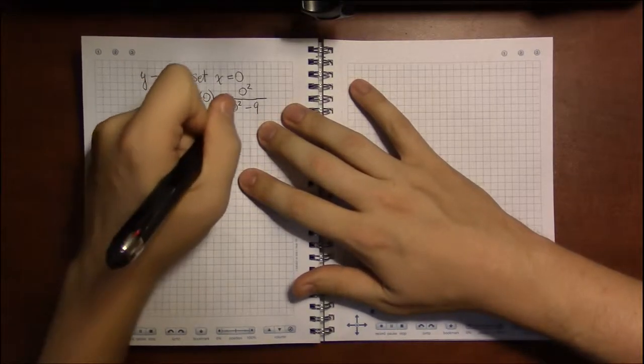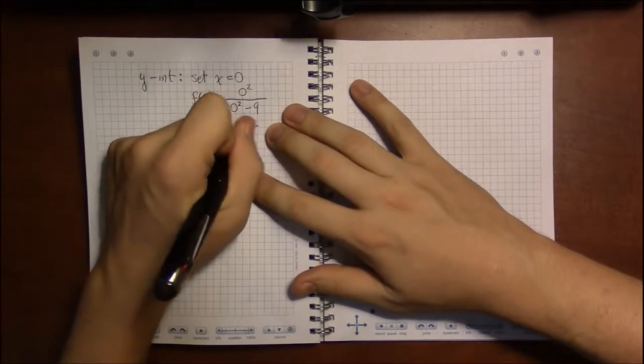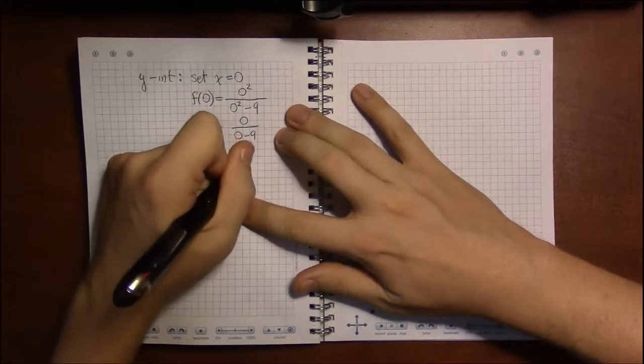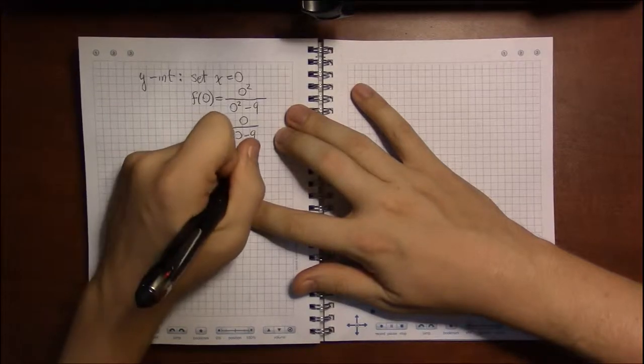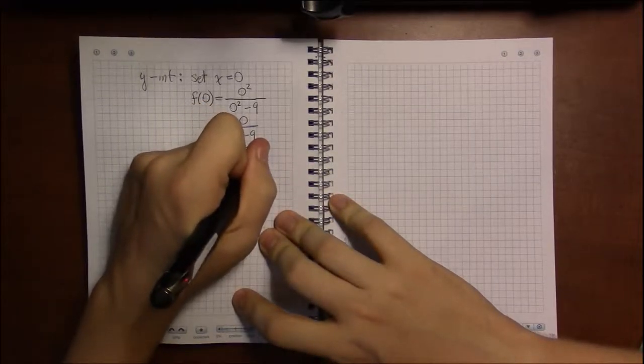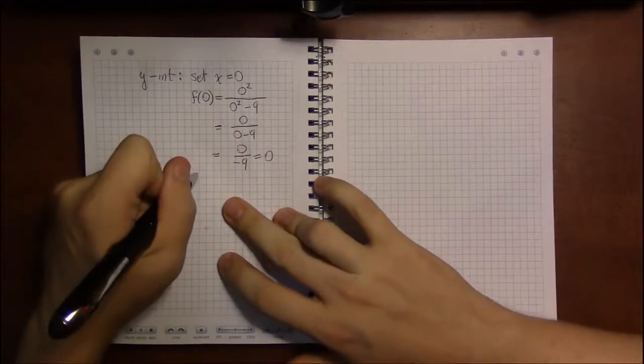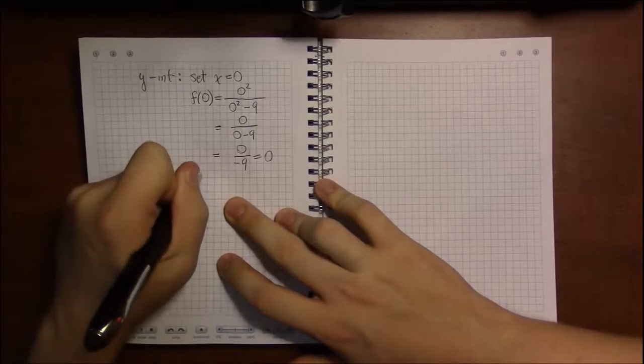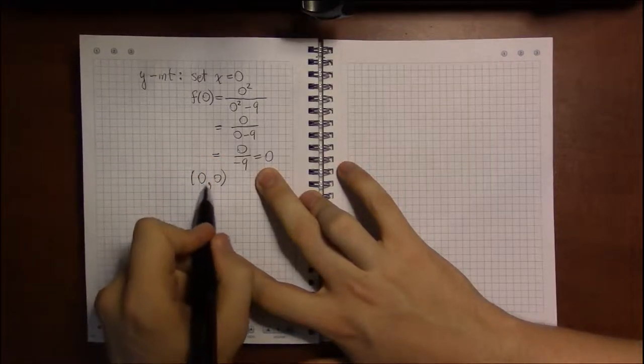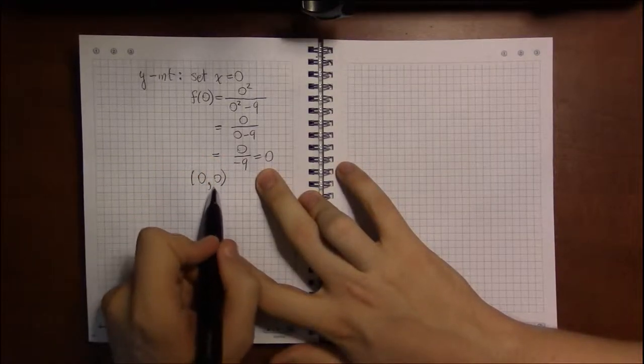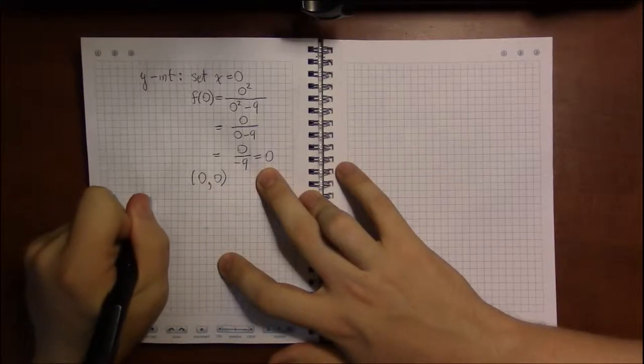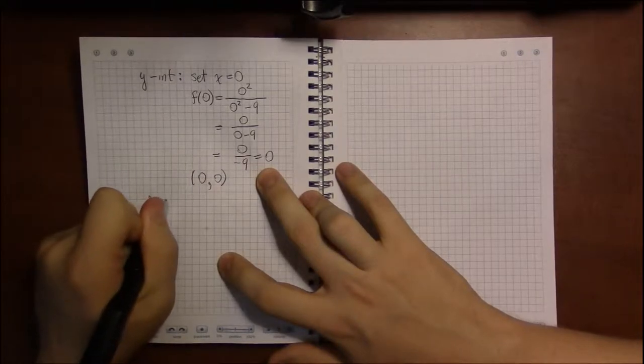So the y-intercept for this function will be 0 squared, which is 0, over 0 minus 9. Zero over any non-zero number will just be 0. So the y-intercept will be the point where when x equals 0, y equals 0. It turns out this is also an x-intercept, because when y is 0, x is 0.